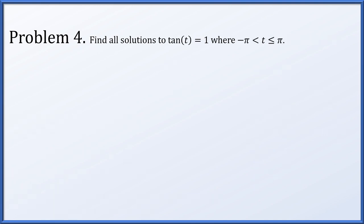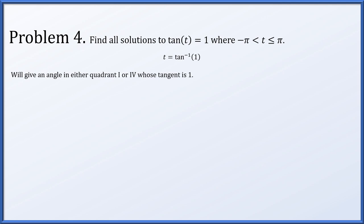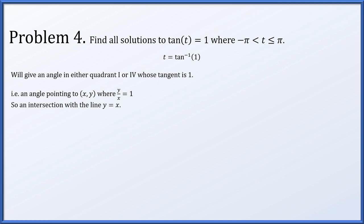In problem 4, we find all solutions to tangent of t equals 1, where t is in the interval from minus pi to pi, strictly greater than minus pi and possibly equal to pi. Taking an arc tangent, t may be arc tangent of 1. Arc tangent has range minus pi over 2 to pi over 2, giving a quadrant 1 or 4 angle. Since the tangent is positive 1, it can't be quadrant 4, so arc tangent of 1 is the quadrant 1 solution.